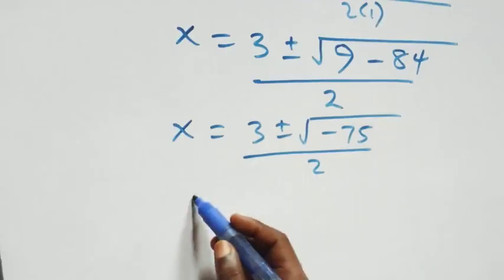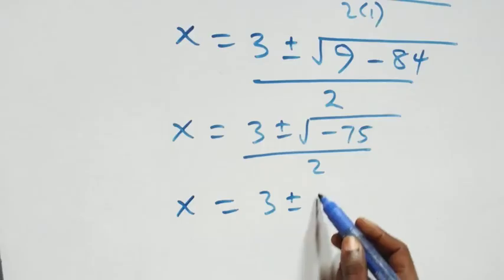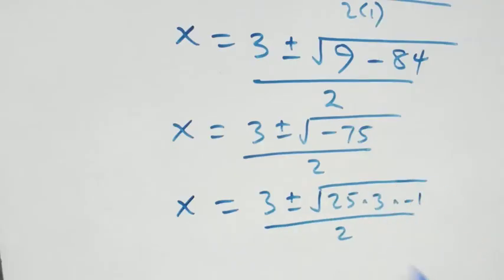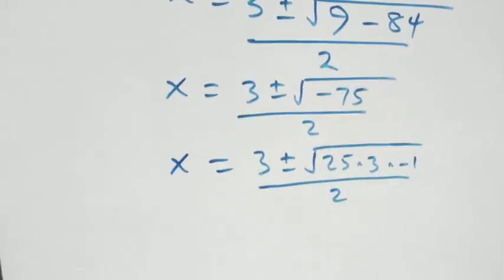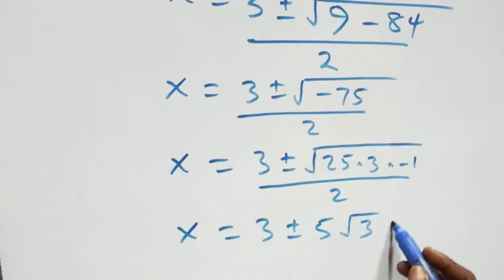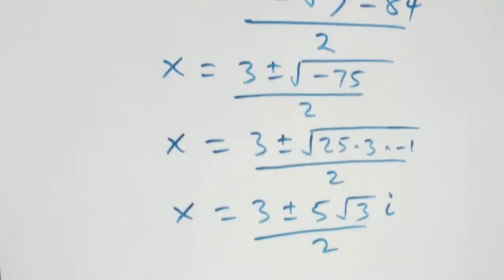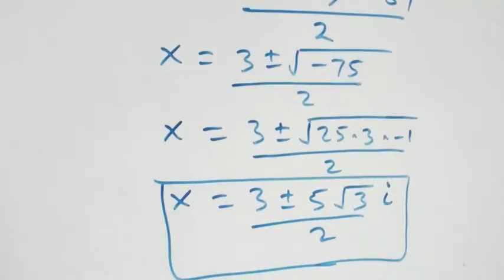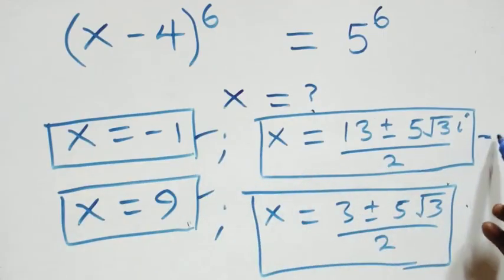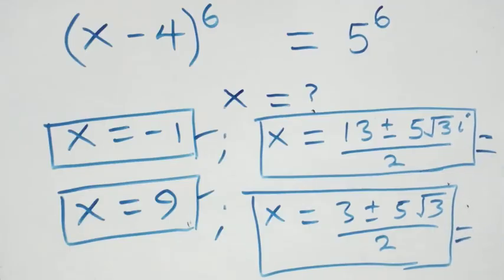Writing root of minus 75 as 5i√3, we get x equals to 3 plus or minus 5i√3, all over 2. So here also we have two complex solutions. Therefore, altogether we have six solutions in this given problem: two real solutions, two complex solutions from the first case, and two complex solutions from the second case — making six solutions. Thank you for watching. Don't forget to subscribe for more videos, turn on the notification bell, share this video, give a thumbs up, and put your comment. See you next class.